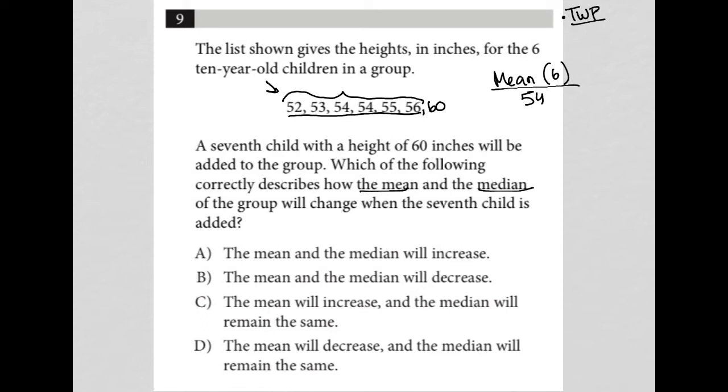But when I go and add in the additional student that has the height of 60, I do the same exact math. 52 plus 53 plus 54 plus 54 plus 55 plus 56, now plus 60.